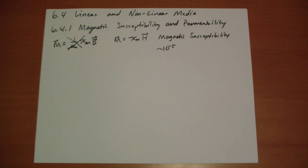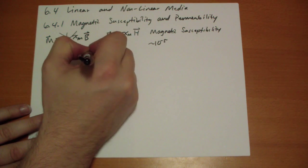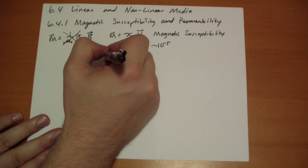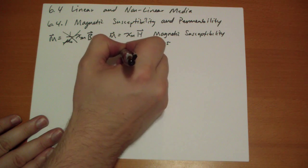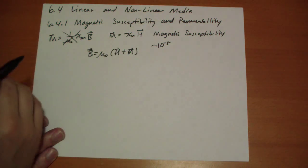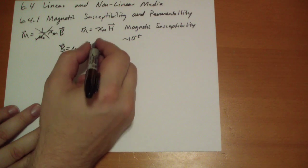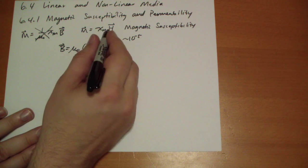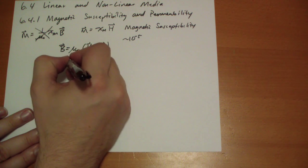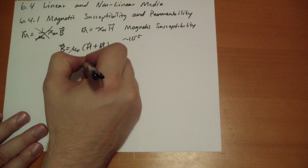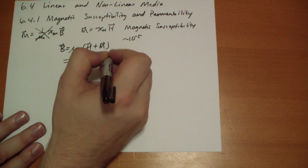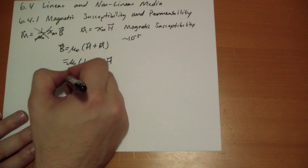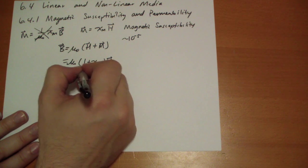Anyway, so in linear media, we can calculate our B vector. If we know it's mu-naught of the H plus the M. Okay, well, the M is just chi M of the H. So you get mu-naught times 1 plus chi M of the H vector. And so you get the simple formula that this is equal to mu of the H vector.